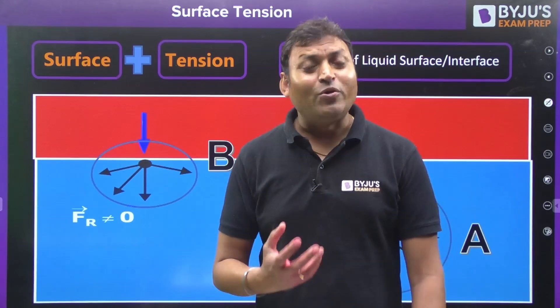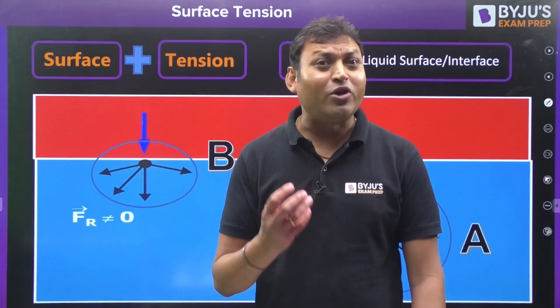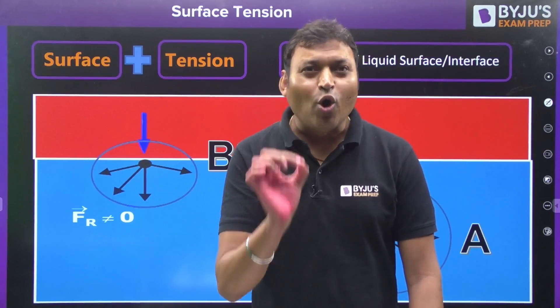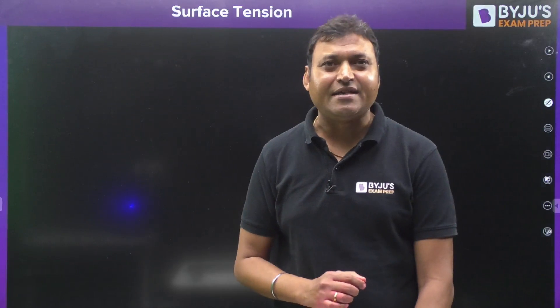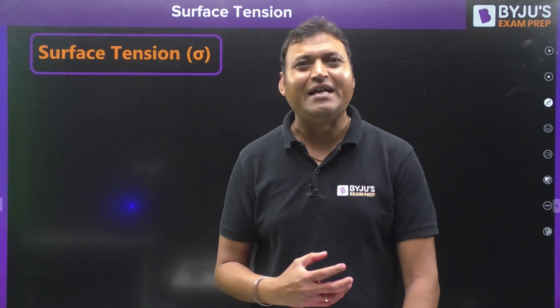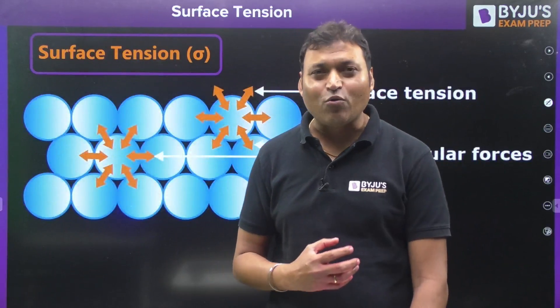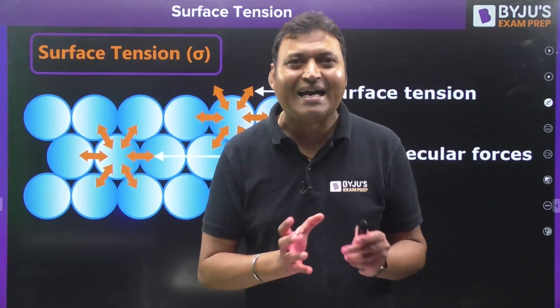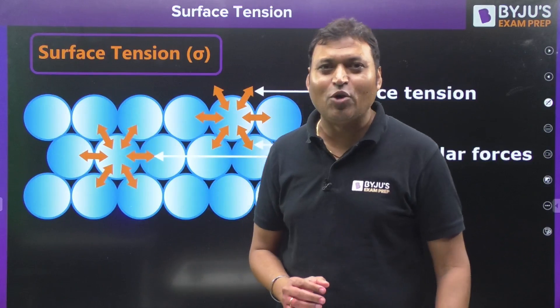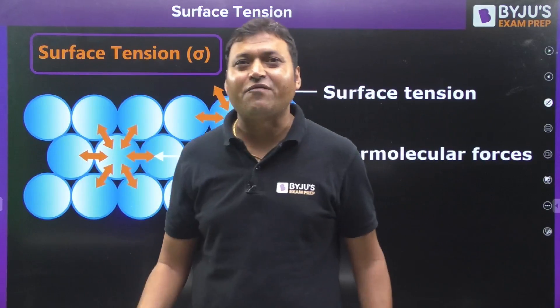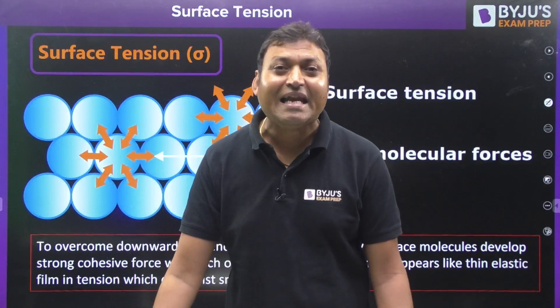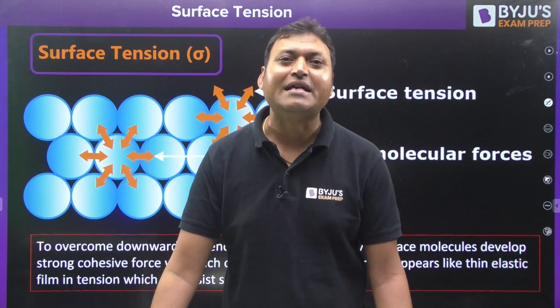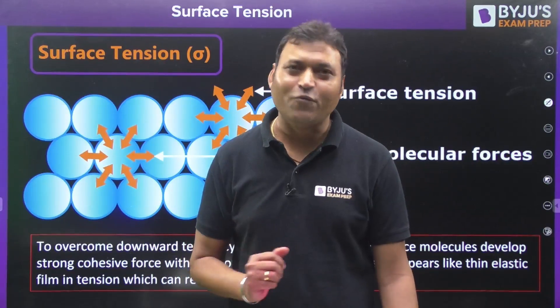So on the interface molecules, the net force always acts in the downward direction. Since the fluid is in a static condition, there should be no downward motion. To overcome this downward tendency, the interface molecules develop a strong cohesive force with one another. In this phenomenon, the whole liquid surface appears like a thin elastic membrane in tension, which can resist small forces.